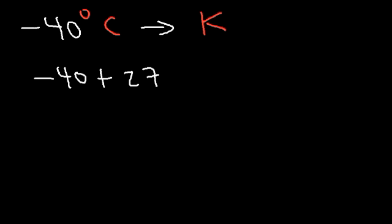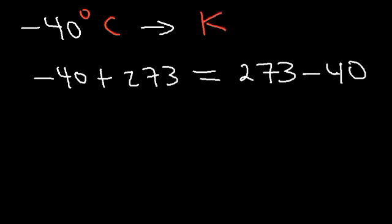Now the last step is straightforward. Convert negative 40 degrees Celsius to Kelvin by adding 273. Negative 40 plus 273 is the same as 273 minus 40 — you can reverse the order of addition, just as 5 plus 3 equals 3 plus 5. So 273 minus 40 is 233. That's the Kelvin temperature for negative 40 degrees Fahrenheit.